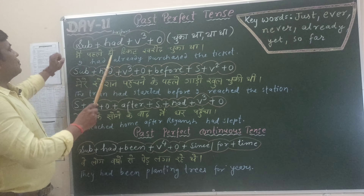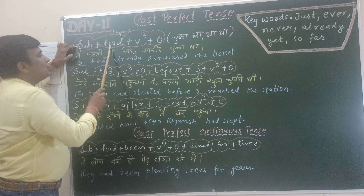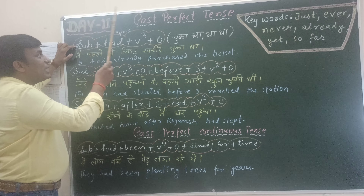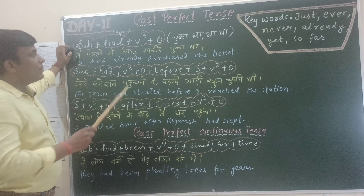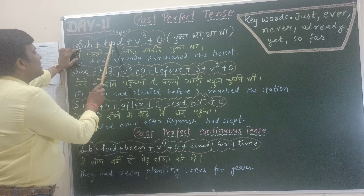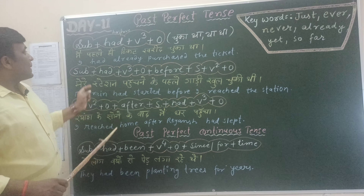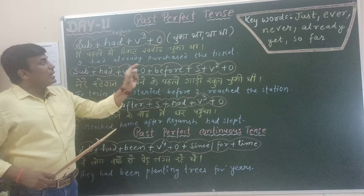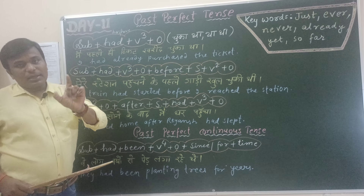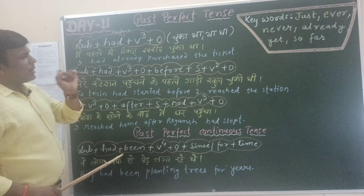Simply what we need to do is replace has/have with had. So the structure becomes: subject plus had plus V3 plus object. For example, मैं पहले ही टिकट खरीद चुका था — I had already purchased the ticket.